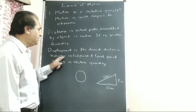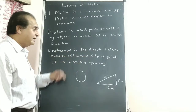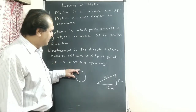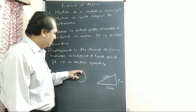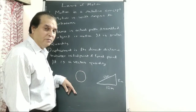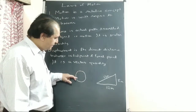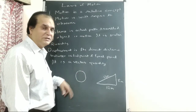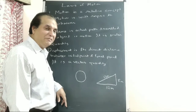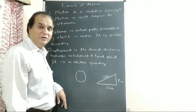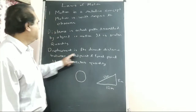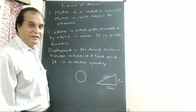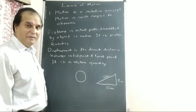But displacement is the direct distance between the initial point and the final point, and it is a vector quantity — it involves direction. Using the path, displacement works out to 13 meters (the hypotenuse). Suppose you are at home: after a circular round you again reach your home. The distance travelled is the circumference of the circle, but the displacement is just 0, because the direct distance between initial and final point is 0.